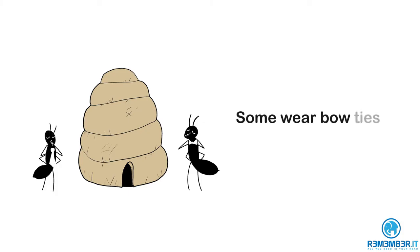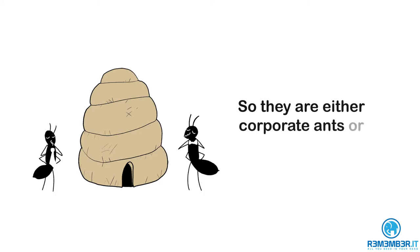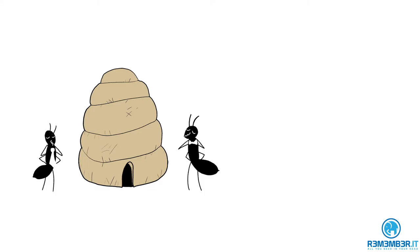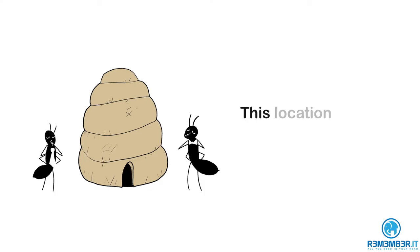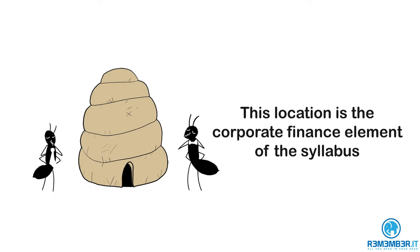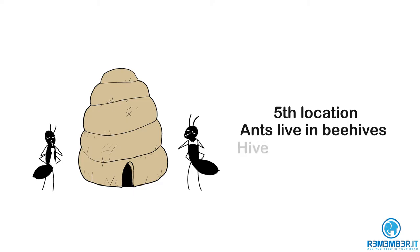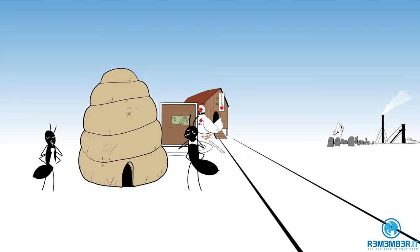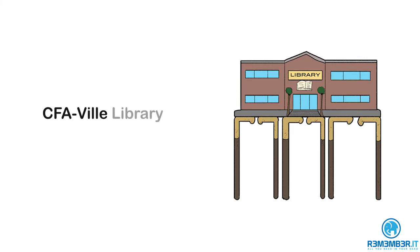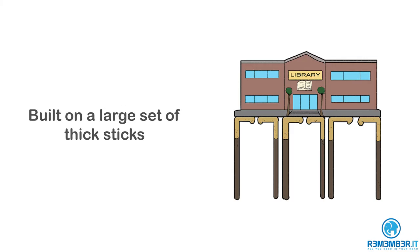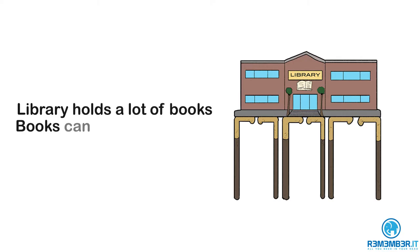The fifth location is a beehive, where alongside the bees, lots of ants live. These ants are all very well dressed and wear ties — some wear bow ties and some wear business ties — so they are either corporate ants or fine ants. Collectively, they are corporate fine ants. Therefore, this location is where the corporate finance element of the syllabus is covered. You know it's the fifth location because the ants all live in beehives, and hive rhymes with five.